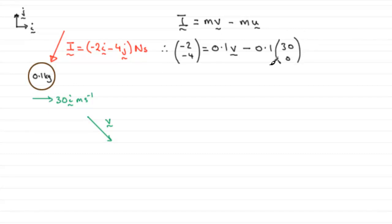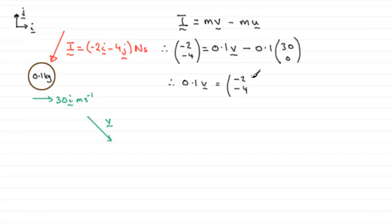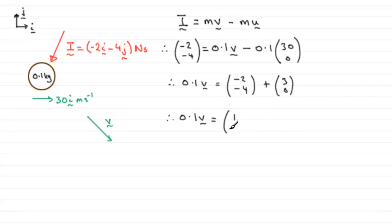What I want to do is add this vector to both sides. This vector, 0.1 times 30 and 0, is going to be 3, 0. So therefore 0.1v equals the vector minus 2, minus 4, plus the vector 3, 0. Working that out, 0.1v equals minus 2 plus 3, which is 1, and minus 4 plus 0, which is minus 4.